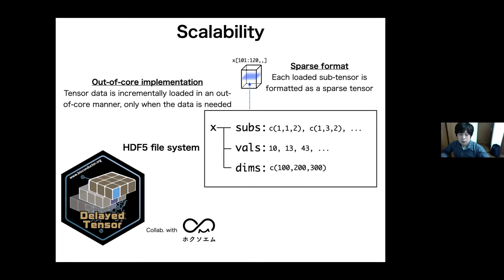So, now I am developing an out-of-core and sparse implementation of tensor called delayedTensor. In this package, a tensor data is stored in HDF5 file and incrementally loaded in an out-of-core manner, only when the data is needed. After data loading, each loaded subtensor is formatted as a sparse tensor. Using this package, we will be able to perform any tensor's arithmetic rapidly.